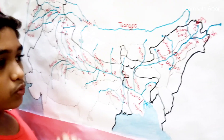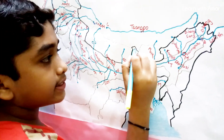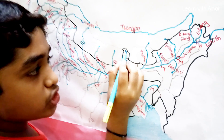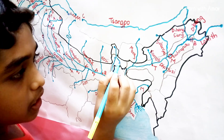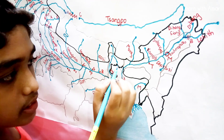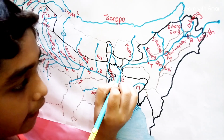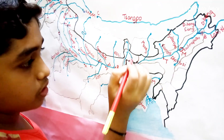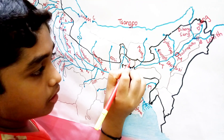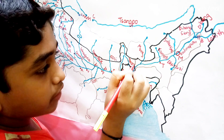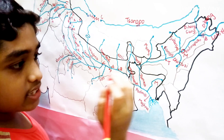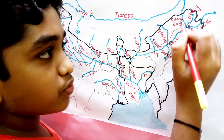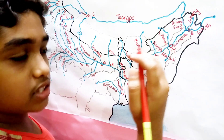The next Right Bank tributary is the Teesta River. It originates in Sikkim, flows through Sikkim and West Bengal, and enters Bangladesh, where it joins the Brahmaputra — known as Jamuna — in Bangladesh. To recap: when Lohit joins with Sangpo, the river is called Brahmaputra; and when Teesta joins with Brahmaputra in Bangladesh, it is called Jamuna.